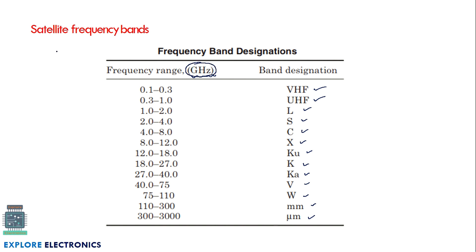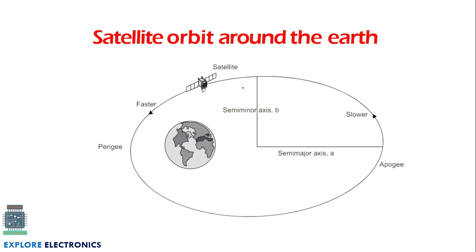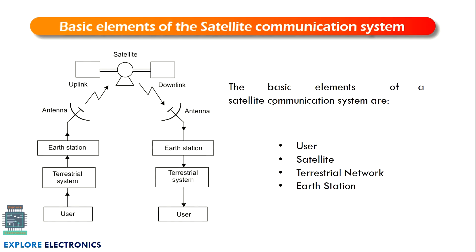The satellite orbit is around the earth. The satellite moves faster when it is at the perigee, and slower when it is at the apogee. As it leaves the apogee the satellite becomes slower, and as it returns to the perigee it moves faster. From the semi-minor axis B and semi-major axis A we can calculate the distance traveled by the satellite as well as its speed.